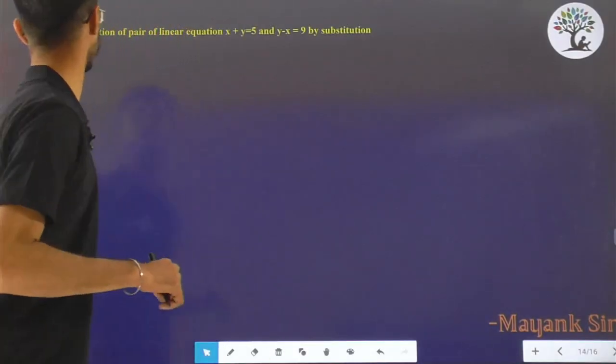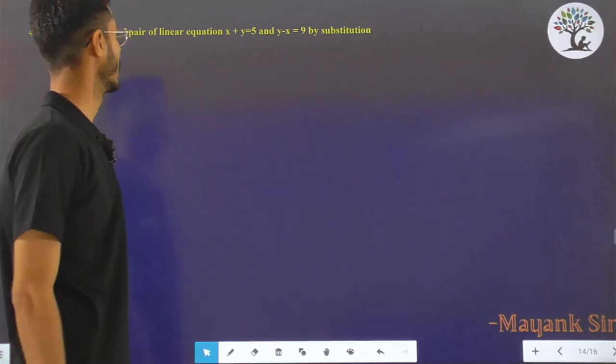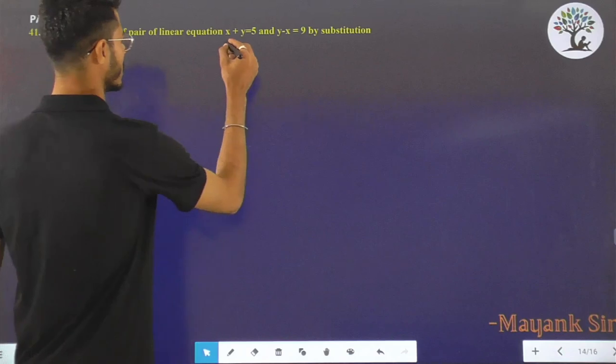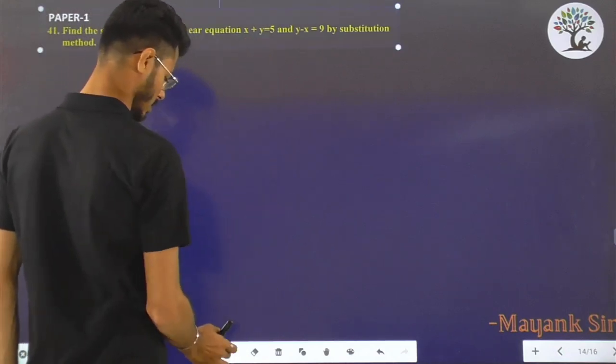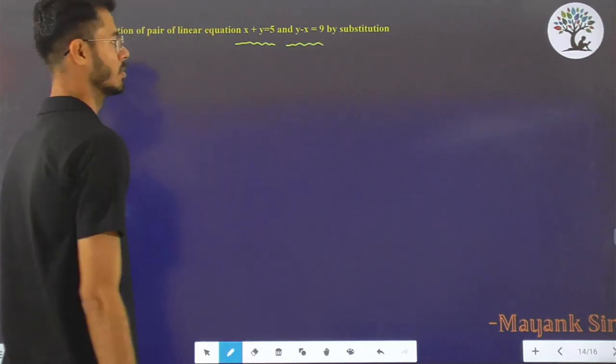Question number 41: Find the solution of pair of linear equations. Here the two equations given are x + y = 5 and y - x = 9.